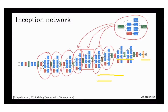In the Inception network, they created blocks using different types of operators — convolutions, max pooling, and different convolution sizes. They created blocks with 1×1, 3×3, and 5×5 filters. These blocks are then connected together, and these blocks are repeatedly connected to create the whole network.